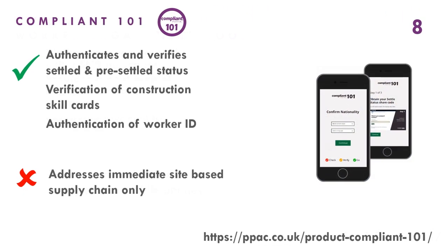Compliant 101 is a method of rapidly authenticating and verifying the right to work, construction skill cards, and worker identification for the UK construction market. It addresses the immediate site-based workforce, rather than people or organizations in the supply chain.